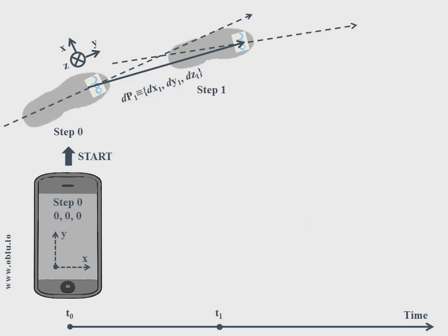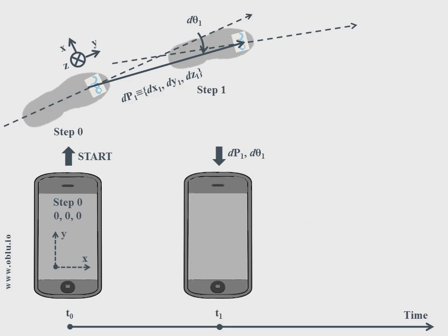The Displacement, DP1, and the Heading Change, D-Theta1, are transmitted to the application platform at the first detected step. The platform then constructs the path in the Global Reference Frame.